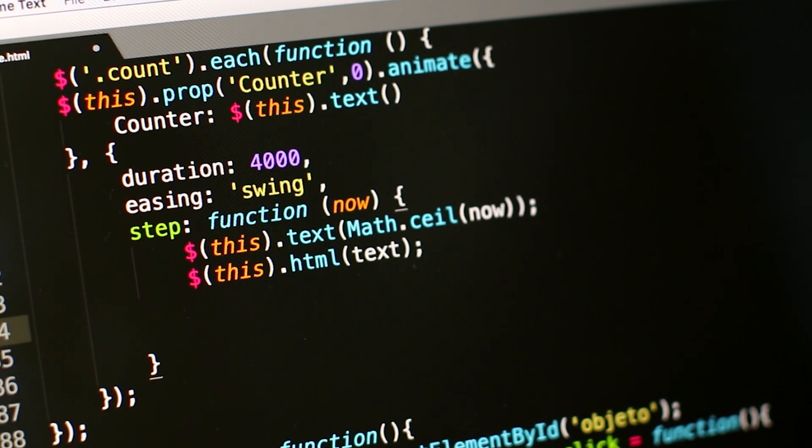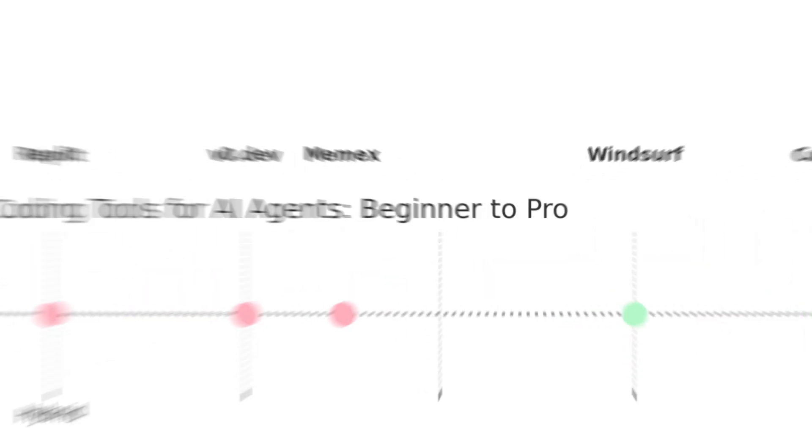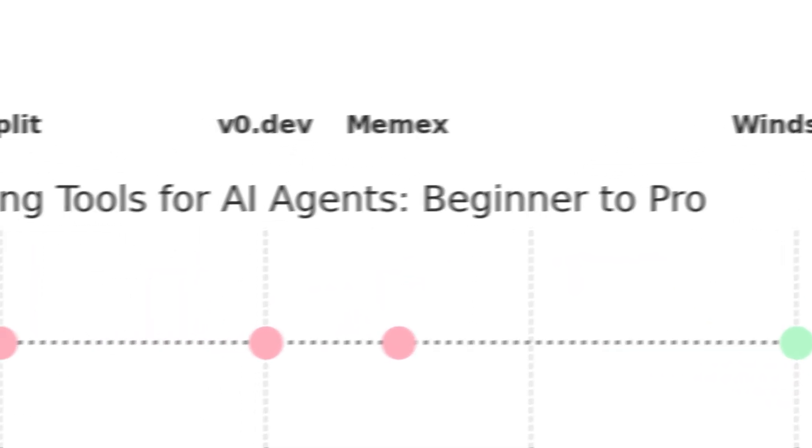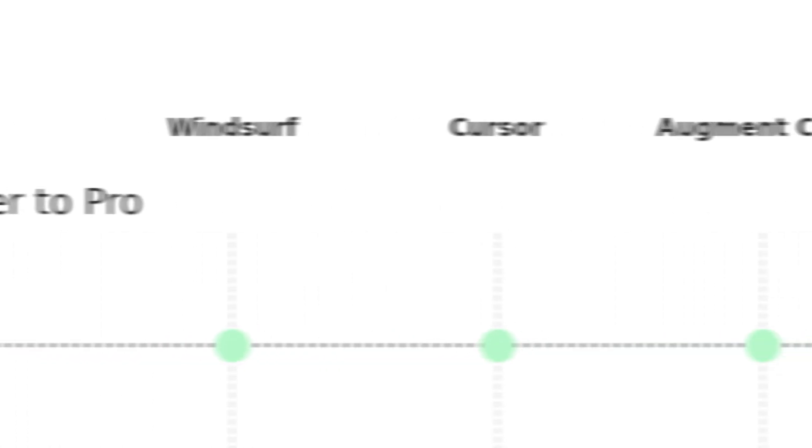And honestly, you don't need to. With the right tool you can launch prototypes, automate tasks, or even create mini products using just natural language. Now before we start ranking, you have to understand one thing: every tool sits somewhere on a spectrum. On one side you have zero control but super easy to use. On the other you have full control but be ready to debug your soul out. Most people fall somewhere in between, so instead of just ranking best to worst, I'll show you where each tool fits on that control spectrum and what type of builder it's actually made for.